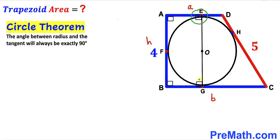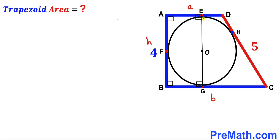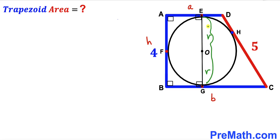This angle is 90 degrees, and likewise this other angle is 90 degrees as well, since OE is a radius and AB is the tangent line, and OG is a radius and CD is the tangent line. I'll label each radius as lowercase r. We can see that segment EG is the diameter of this circle.